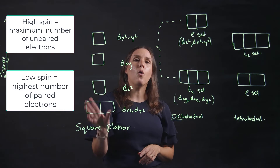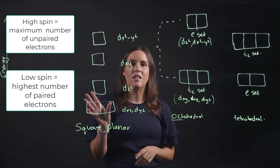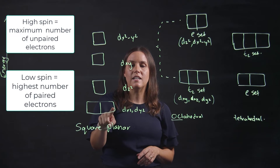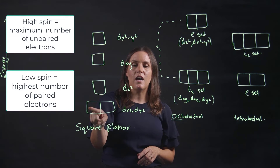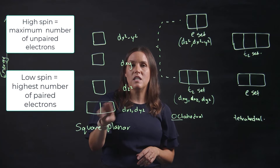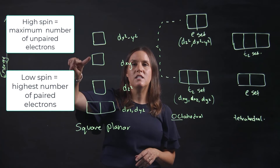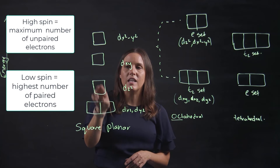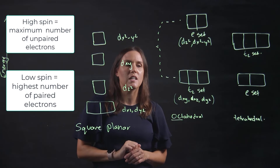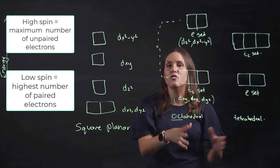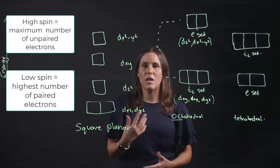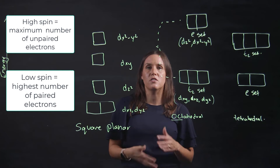Square planar always exists in a low spin state — you always fill up the dxz, dyz, then the dz², then dx²-y², completely filling each set before moving on to the next. For octahedral and tetrahedral, whether it's high spin or low spin depends on the specific compound and the information you're given.